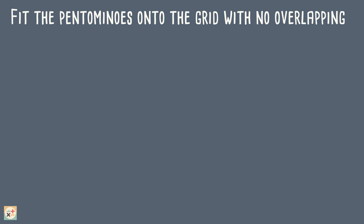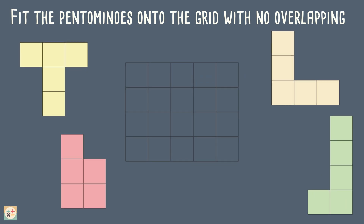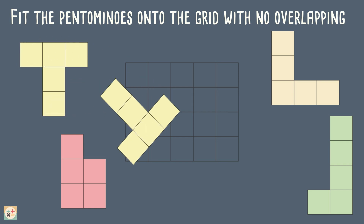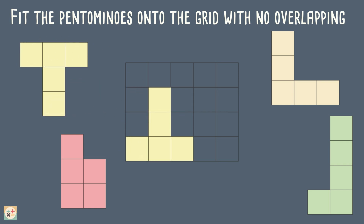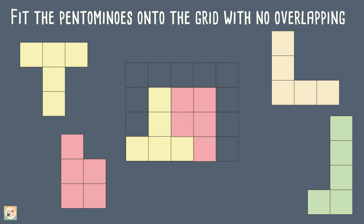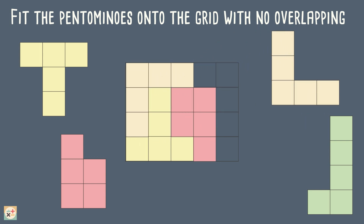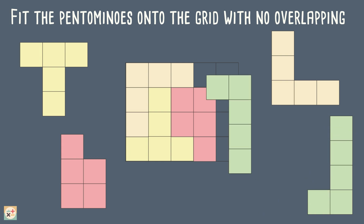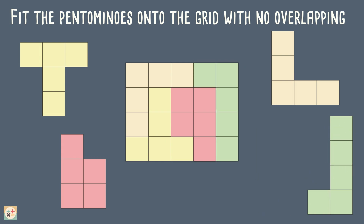Here is an example of a simple pentomino puzzle. We need to use only the pentominoes shown on screen to completely fill the grid with no overlapping pentominoes. We can rotate and reflect the pentominoes if we need to. There may also be more than one way to complete the puzzle.